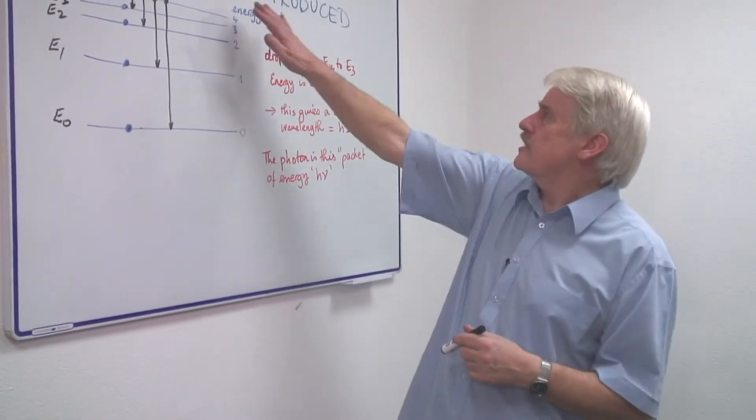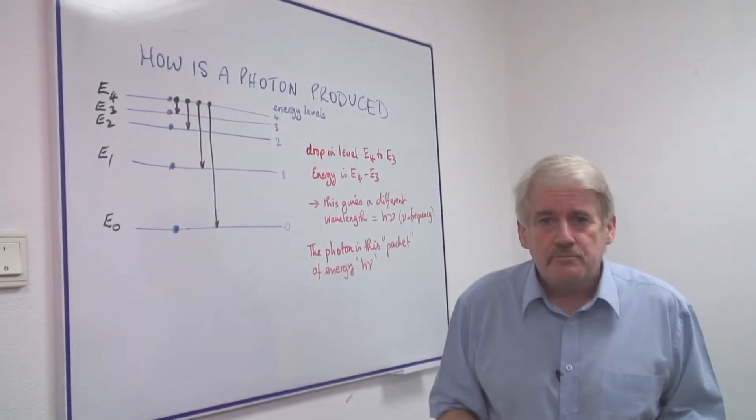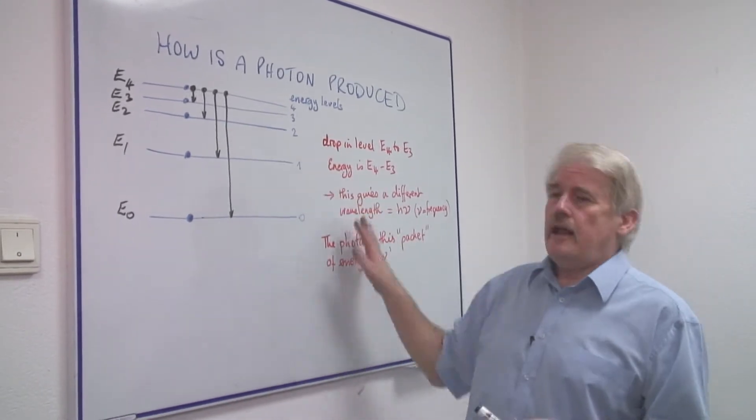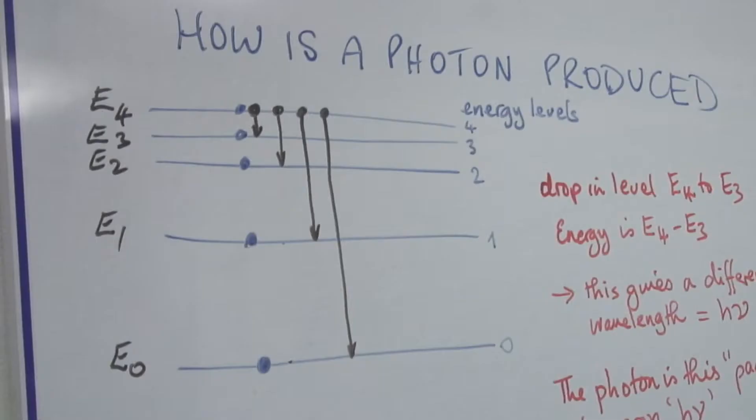Hi, I'm Steve Jones and I'm going to tell you how a photon is produced. Now in an atom of course we have a nucleus, but above the nucleus we have electrons.